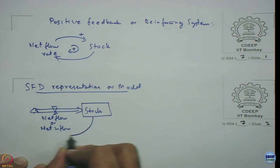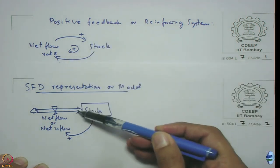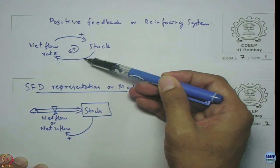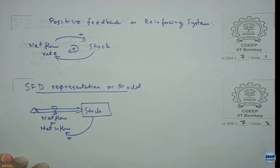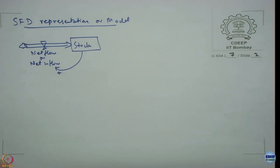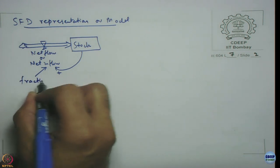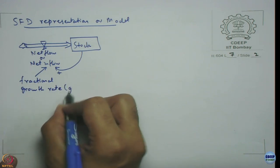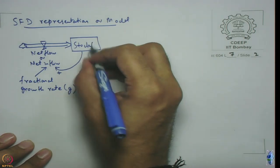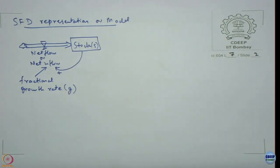The stock again feeds back into the net flow rate. The top causal link is represented by this thick arrow with a valve. The bottom causal link is represented by an explicit causal link in your stock flow diagram. And to now capture the relation between the net inflow versus stock, let us introduce a new variable called as fractional growth rate.